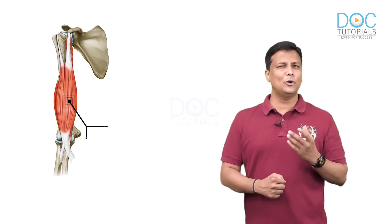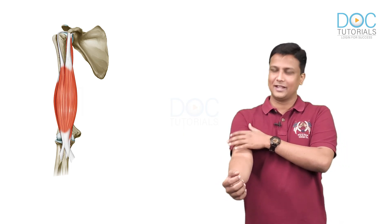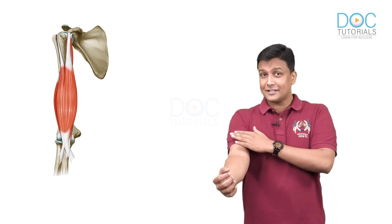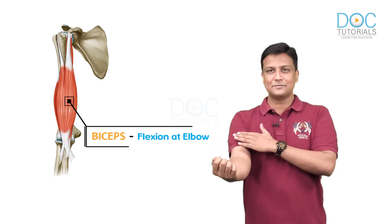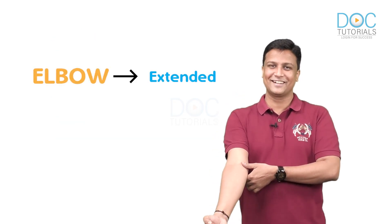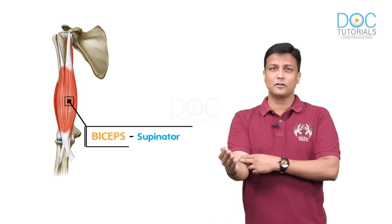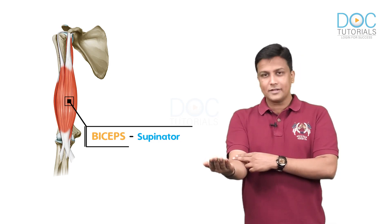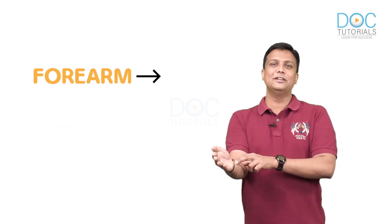The next nerve involved in Erb's Paralysis is the musculocutaneous nerve, which supplies all the muscles in the anterior compartment of the arm. The biceps and brachialis muscles help in flexion at the elbow joint. If the musculocutaneous nerve is gone and these muscles are paralyzed, the elbow cannot be flexed and will be in an extended position. Additionally, the biceps is a strong supinator, so with it gone, the forearm cannot be supinated and will be in a pronated position.